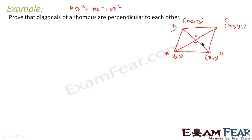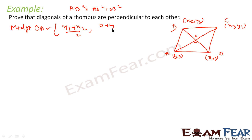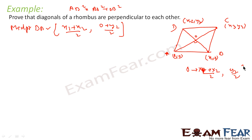So this point O will be the midpoint of BD, and also the midpoint of AC. Let us find the midpoint of BD. The midpoint of BD is (x1 + x2)/2 comma y2/2. So point O is nothing but ((x1 + x2)/2, y2/2).